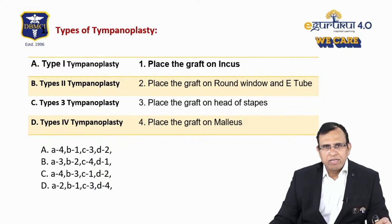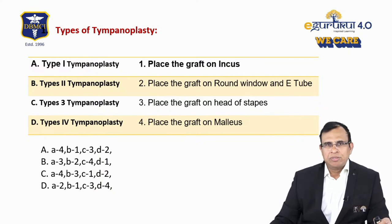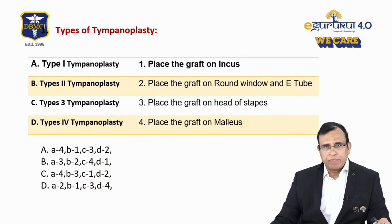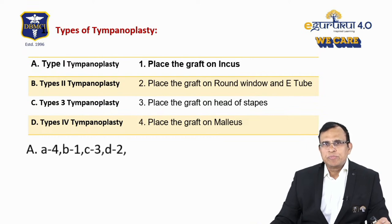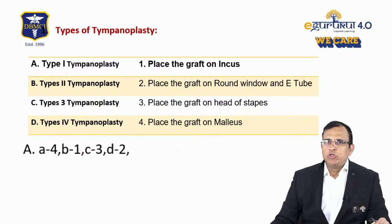Tympanoplasty is easily the most important surgery we have to know. You have to know everything — most importantly the names of tympanoplasty and what is done in which type. There are five types total. The correct answer is: Type 1 — place the graft over the malleus; Type 2 — place the graft on the incus; Type 3 — place the graft over the head of stapes; Type 4 — place the graft over the round window and the Eustachian tube.